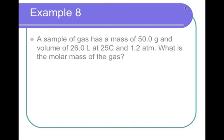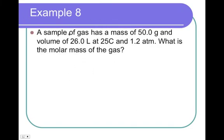All right, we've got one more example. A sample of gas has a mass of 50 grams, a volume of 26 liters at 25 degrees Celsius and 1.2 atmospheres. What is the molar mass of the gas? So, again, we have the word mass. So, we're going to use PVM = mRT.